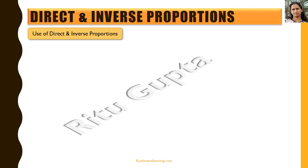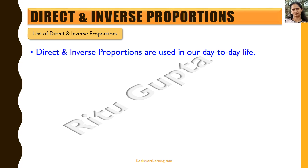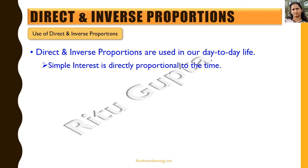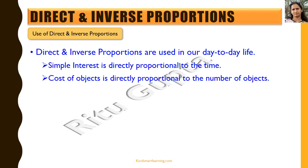Let's look at some uses of direct and inverse proportions in day-to-day life. Simple interest is directly proportional to the time for which money is deposited, and also directly proportional to the rate of interest and the principal amount deposited. The cost of objects is directly proportional to the number of objects — for example, if you buy one chocolate for 5 rupees, you will get five chocolates for 25 rupees, showing direct proportionality between number of objects and total cost.